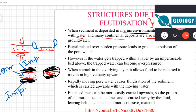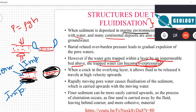If water gets trapped within a layer by an impermeable bed above, the trapped water can become over-pressured. Normal pressure is given by ρgh — hydrostatic pressure. If the pressure is more than hydrostatic pressure, it is known as over-pressure.